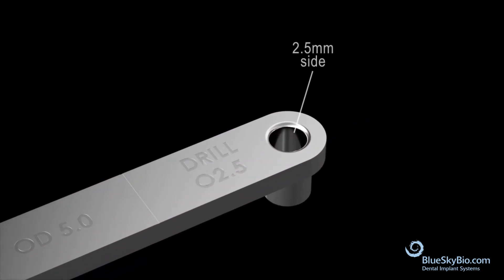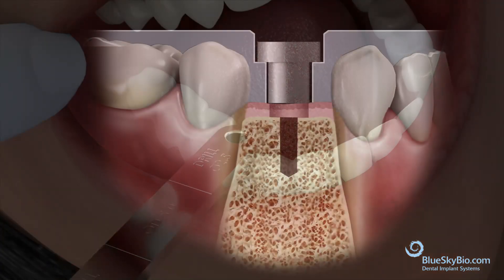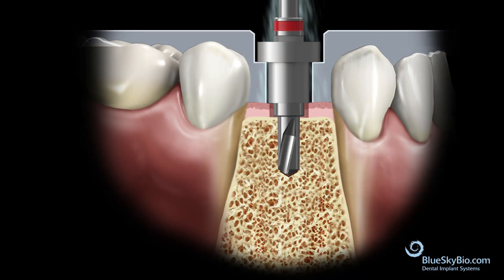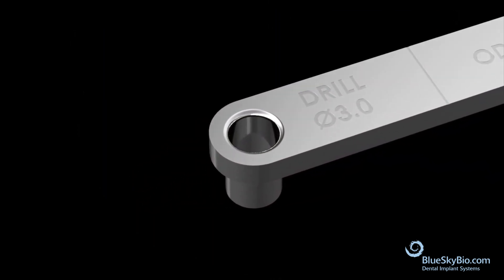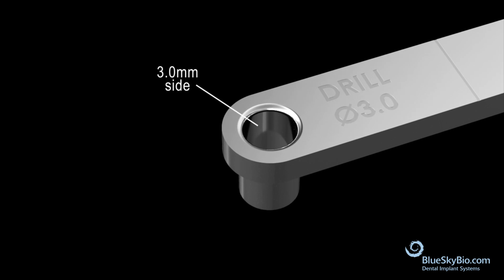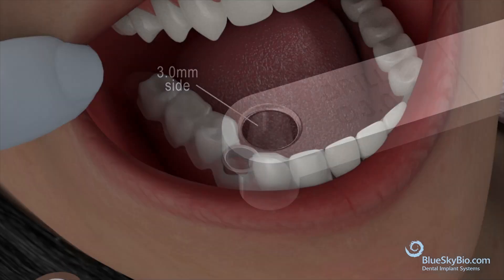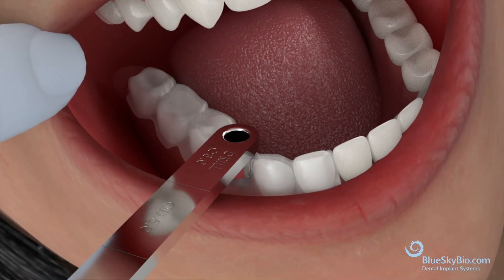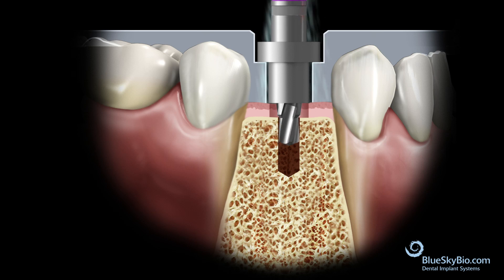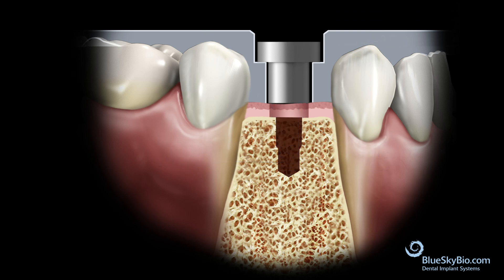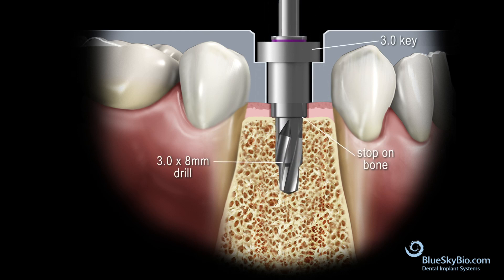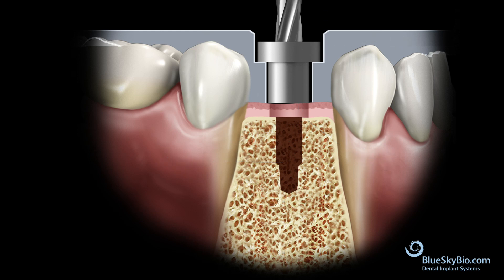The 2.5 by 6 millimeter drill will use the 2.5 side of the OD 5 millimeter key. The 3.0 by 6 millimeter drill will use the 3.0 side of the OD 5 millimeter key — it has only one hole. Place the 3.0 side of the key in the guide, insert the 3.0 by 6 millimeter drill, and proceed. Then deepen sequentially to final depth: first 3.0 by 8 millimeters, then 3.0 by 10 millimeters.